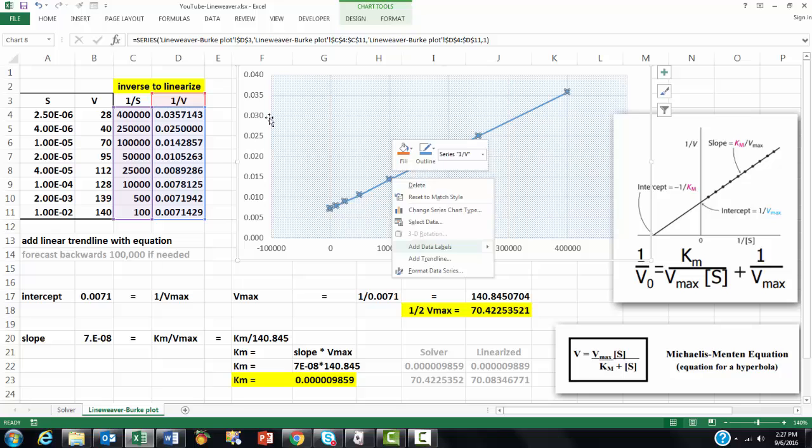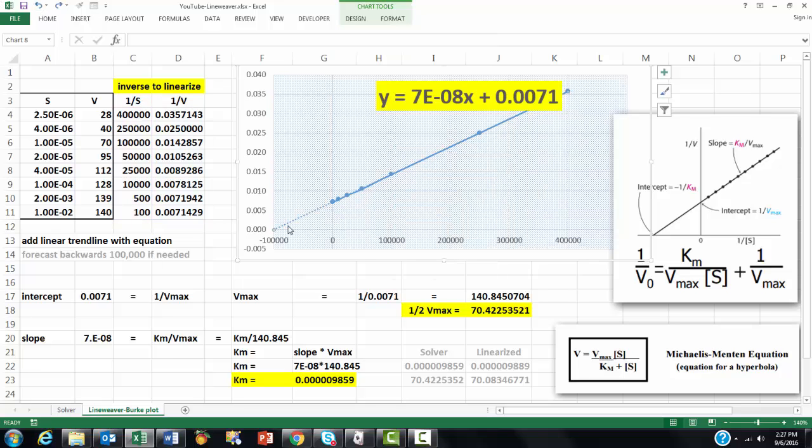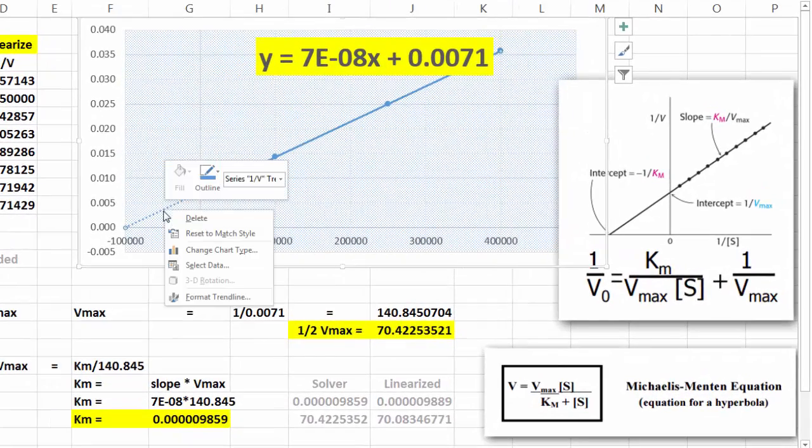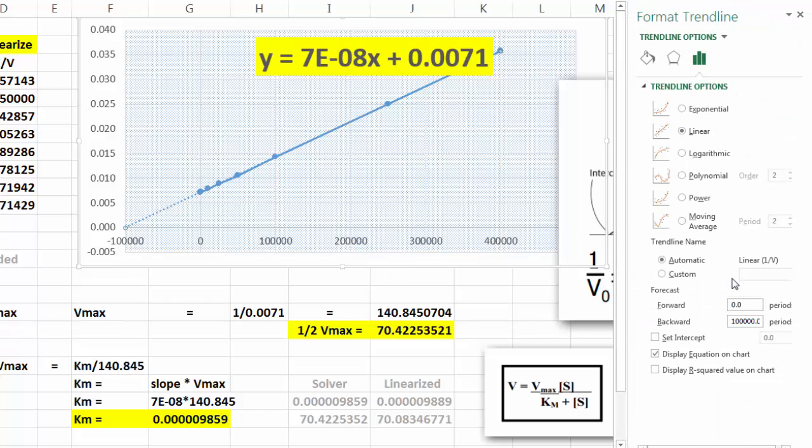You can add that right from here. I am just going to undo it, it saves me some work. And make sure that when you do that, that you have in here, format the trend line, that you make it linearized and that you display the equation on the chart. So we are going to use this equation in order to calculate the Km and the Vmax.